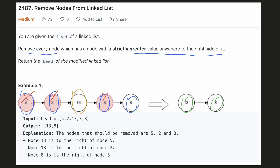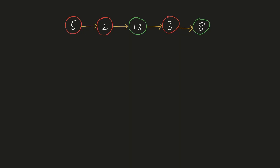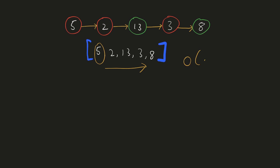Let's see how we can solve this problem. Let's reuse the same example from the problem statement. To simplify our problem, let's assume that we don't have a linked list and we are just working with the same numbers in an array. One obvious brute force way to solve this problem would be: for each element, we'll check all the elements on the right and if we find an element greater to it, we'll delete it. The time complexity would be O(n²). Let's try to improvise it.